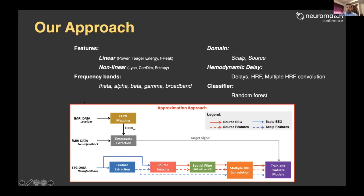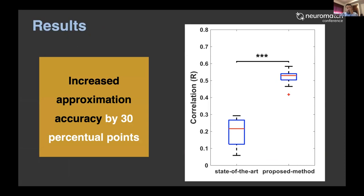Here is a short pipeline of the approach: we mapped the region of interest, extracted the BOLD signal time course from fMRI data on that ROI as our target signal, then performed feature extraction from the EEG data using multiple HRF convolution on the scalp, and also conducted source imaging with spatial filtering before applying the multiple HRF convolution. Our results showed that the EFP method achieved only about 20% correlation, while our method increased that correlation by about 30 percentage points between the predicted BOLD from EEG data and the real BOLD from the ROI.